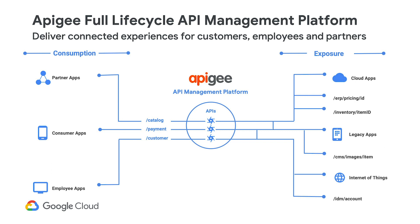Your enterprise has many types of applications — you're probably building new applications with microservices, you still carry legacy applications, and you're also consuming APIs built by other vendors like Salesforce, Workday, and other SaaS providers. API management is super critical for the consumption layer because you want to take all these business assets and make them available to your consumers. Succinctly put, API management manages the relationship between providers and consumers of APIs.